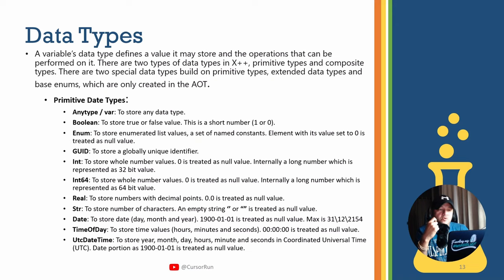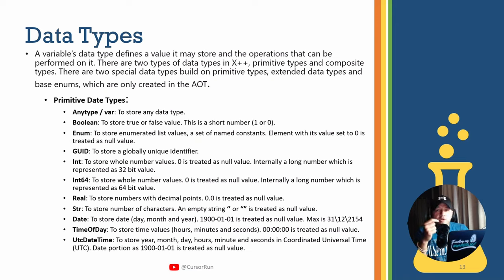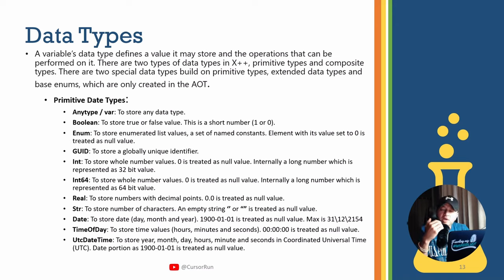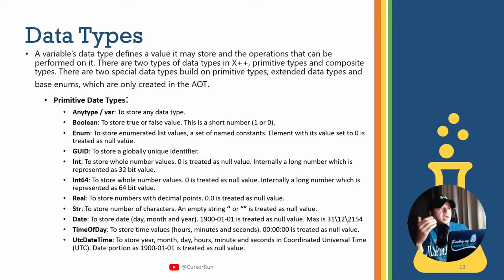You tell your system: I'm going to define a variable called age, and that variable's data type is going to be integer. The system will make sure you only store an integer or numeric value in that variable. If you try to store a string, it will generate a compile-time or runtime error. In X++, there are two types of variables: primitive or standard data types, and composite data types.